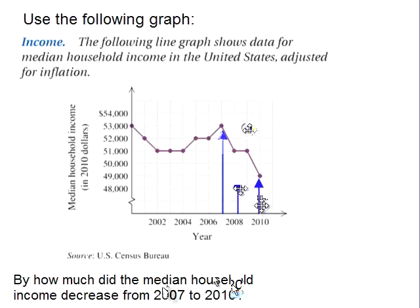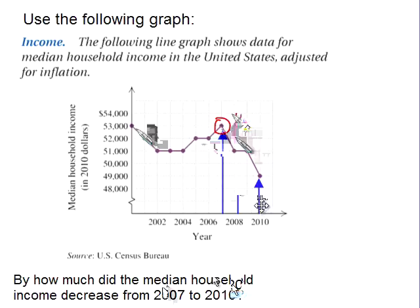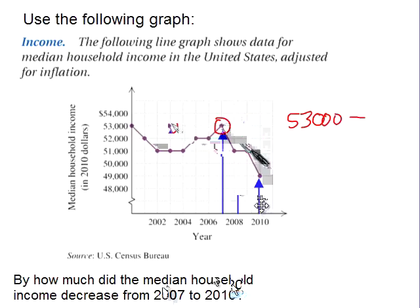Now, we want to know how much the median household income — which is our output, or our vertical axis — decreased. So we want this value here, which is $53,000, minus — because I want the difference — this y-value, or output value, which is $49,000.